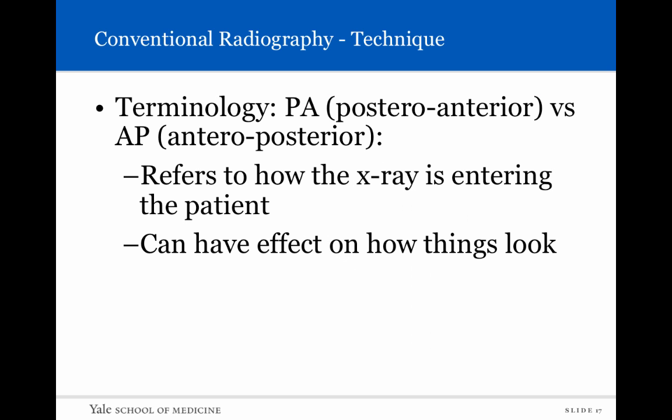In terms of terminology, this is important. We call a radiograph — particularly when talking about chest X-rays — PA versus AP. PA refers to posterior-anterior and AP is anterior-posterior, referring to how the X-ray is first entering the patient. If it enters the patient's back first, we call it a posterior-anterior X-ray. If it enters from the frontal side of the patient going to the back, we call it an anterior-posterior X-ray. This is important because it has an effect on how things look.